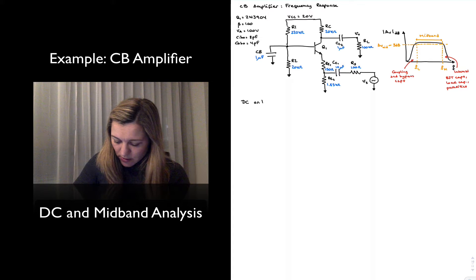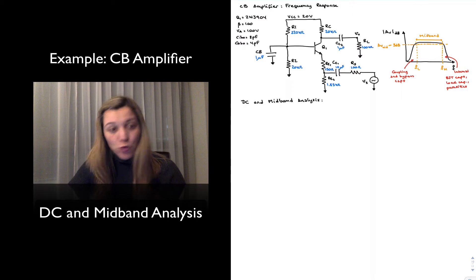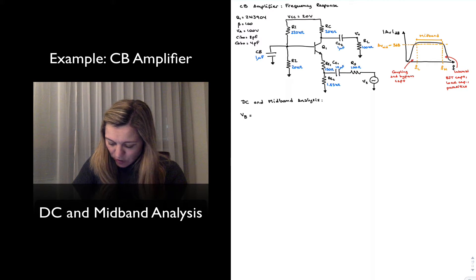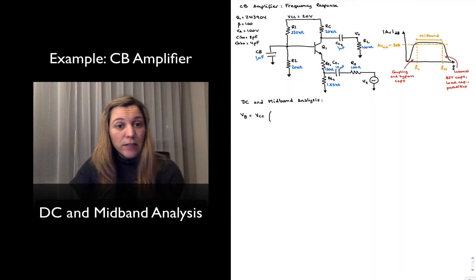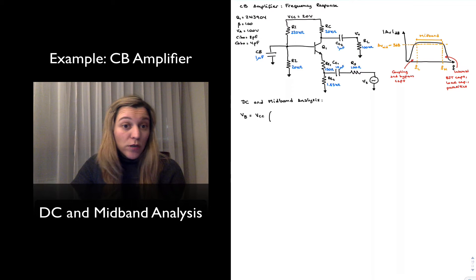DC and mid-band analysis. For my DC analysis, I'm going to assume all my bypass and coupling capacitors are open circuits. I'm going to calculate my base voltage, which is equal to VCC times — I can calculate it using the voltage divider equation by noting that VCC gets divided between R2 and R1, and the base voltage will be the voltage across R2.